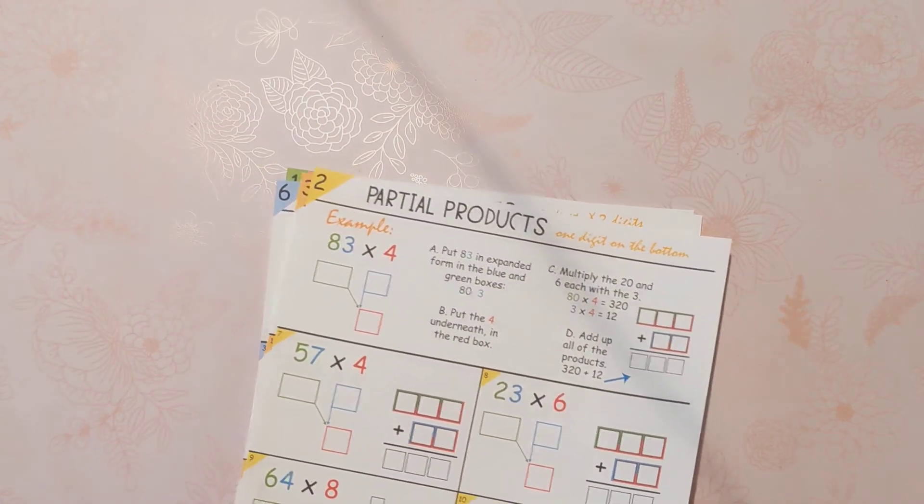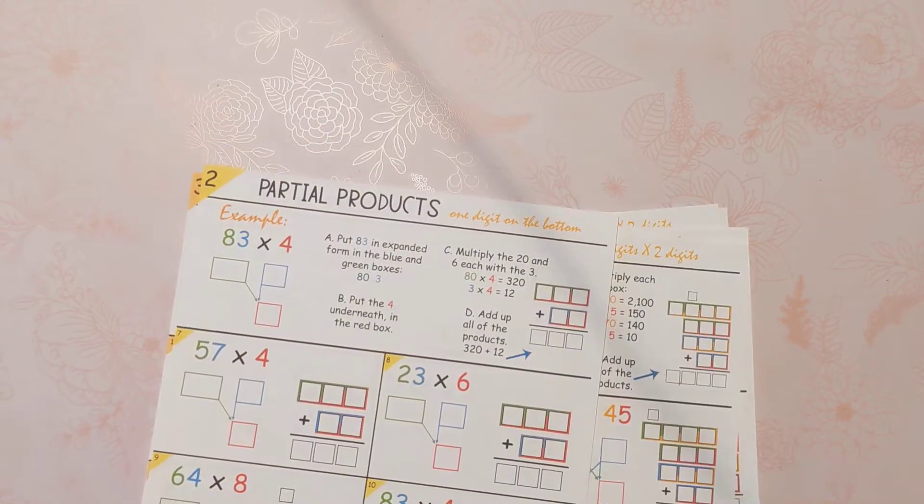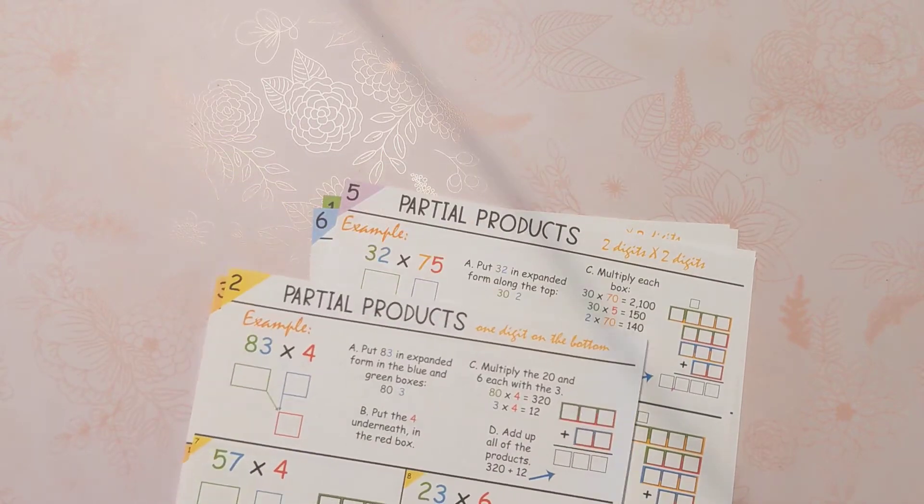Hi everybody, today we're doing partial products and we are going to do two digits times one digit.